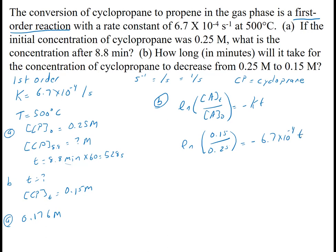So now that I have both parts of this fraction, I can take the natural log of that. And when I do that, I get negative 0.5108 is still negative 6.7 times 10 to the minus 4th T. So I'll divide both sides by the negative 6.7 times 10 to the minus 4th. So negative 0.5108 divided by negative 6.7 times 10 to the minus 4th is equal to T. So T is 762 seconds.